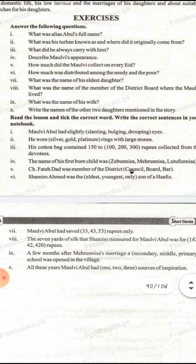Question 1: What was Ali Sabul's full name? His full name was Moulweboul Barakat. Question 2: What was his turban known as and where did it originally come from? His turban was known as Mashhad-e-Lungi. Originally, it came from Mashhad in Iran. Question 3: What did he always carry with him? He always carried a walking stick with him.